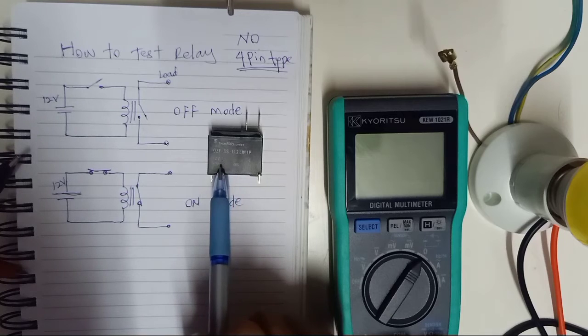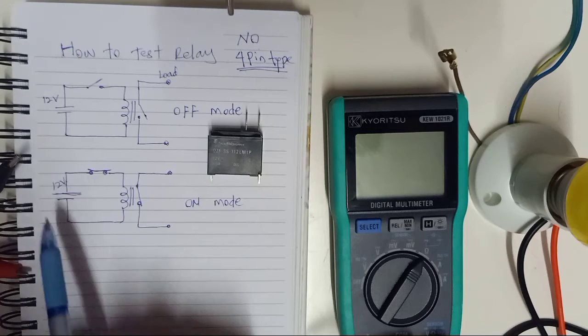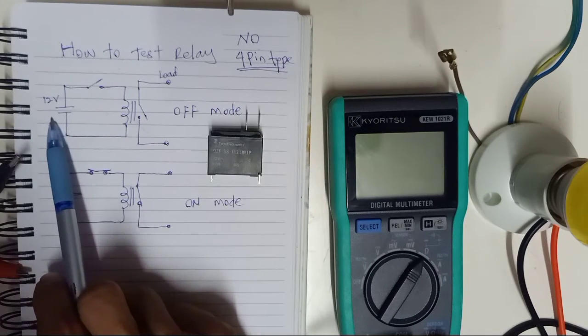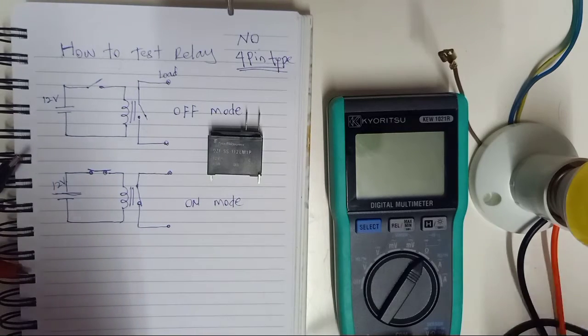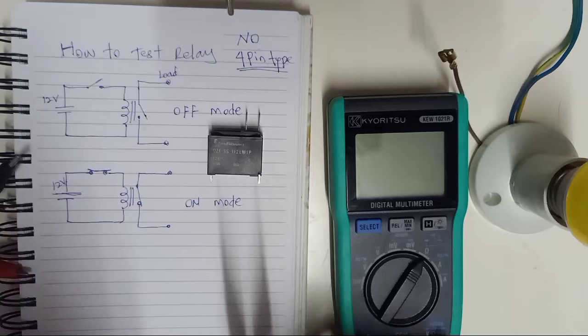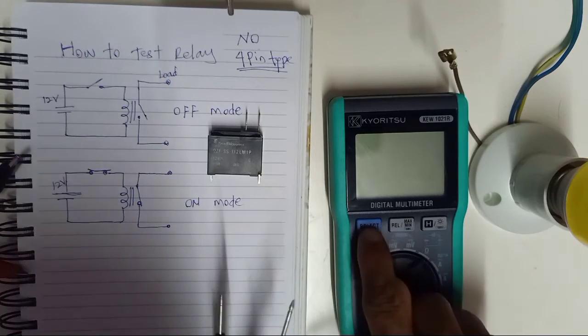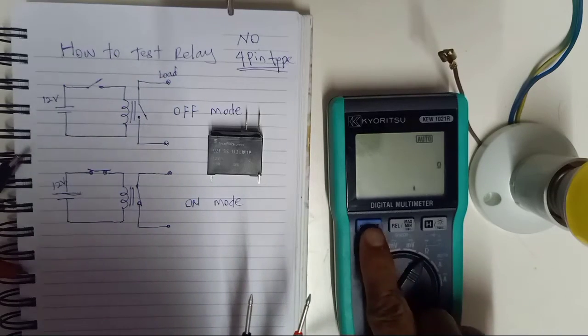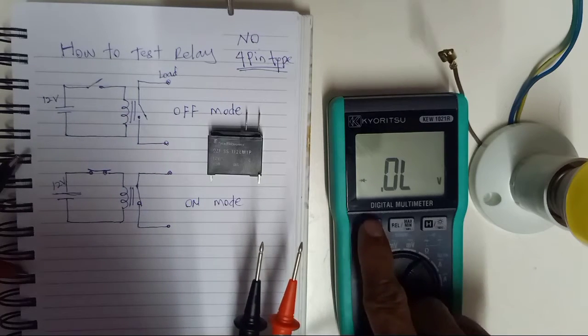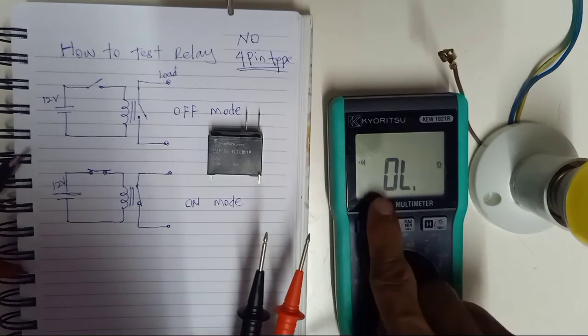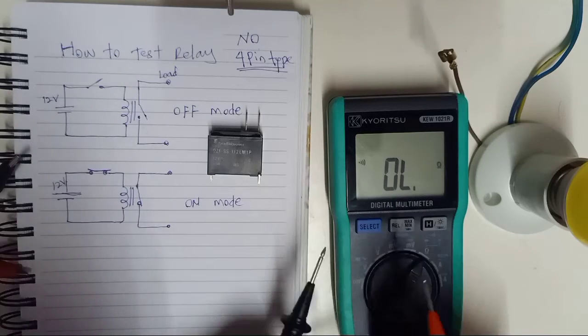So how are we going to test this kind of relay? Since you already know your relay is 12-volt, first we're going to test with a digital multimeter. Select on the buzzer mode.